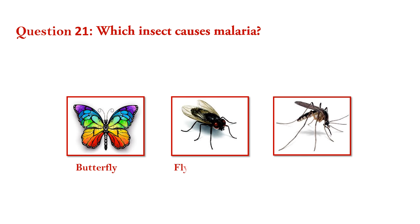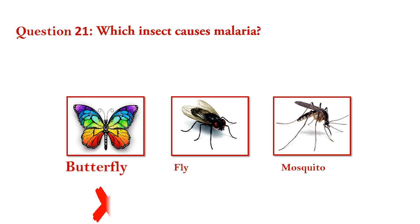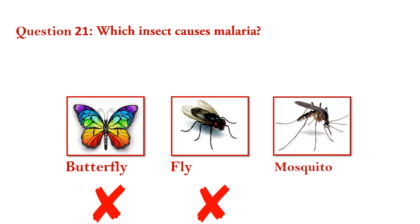Question number 21. Which insect bites and spreads disease? Butterfly — wrong. Fly — wrong. Mosquito — right. Answer is mosquito.